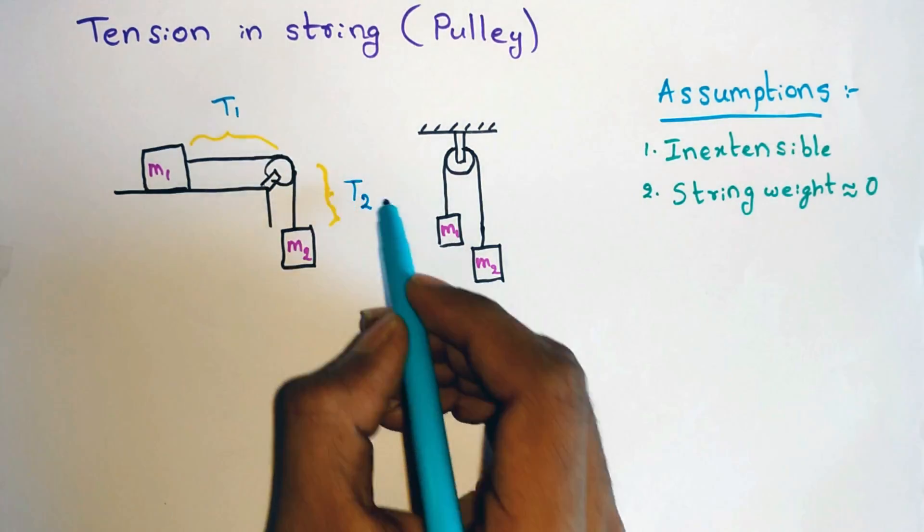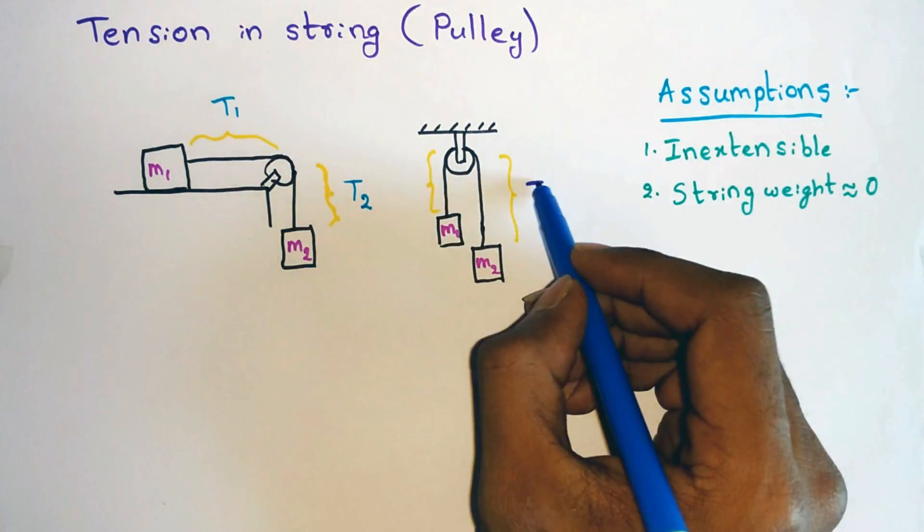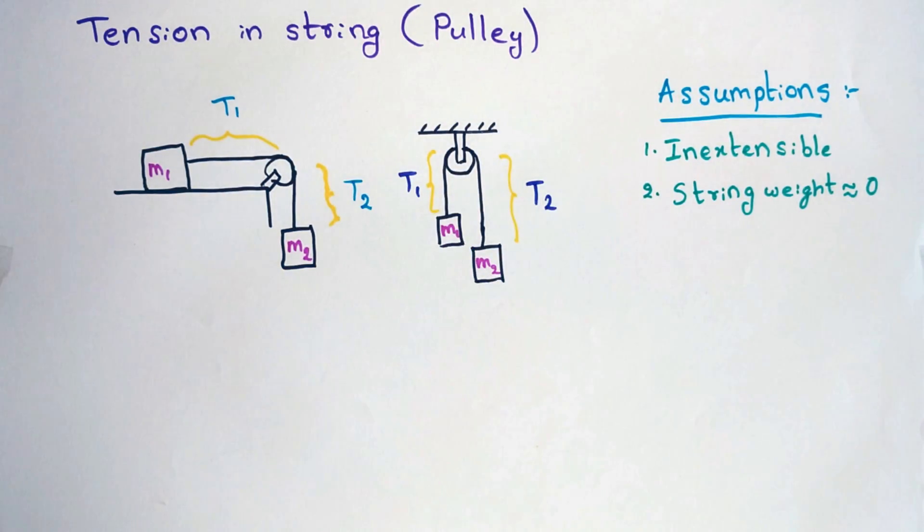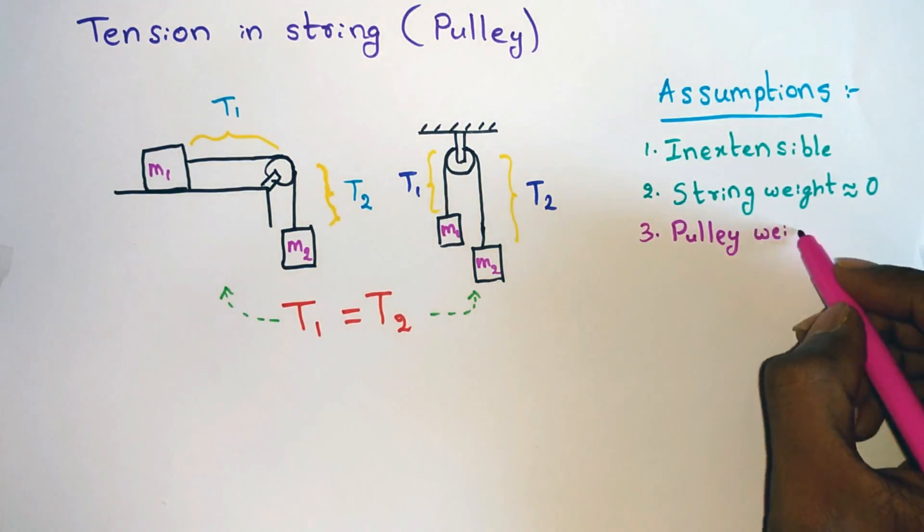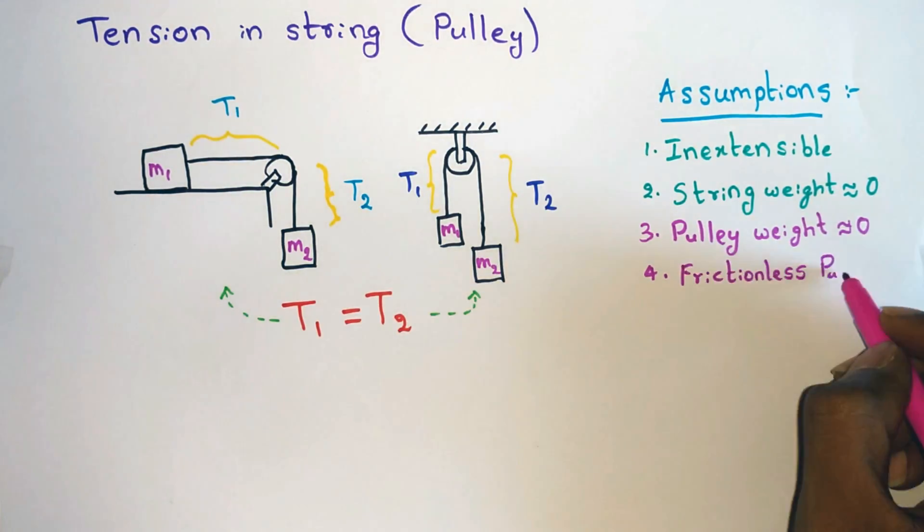So let these tensions be T1 and T2 and the same is applied for the second case also. We can actually say that T1 equals T2 in both of these cases only if the pulley weight is negligible and the pulley is frictionless.